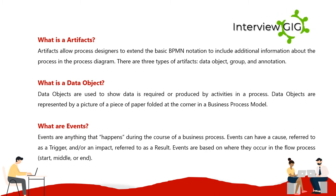What is a data object? Data objects are used to show data required or produced by activities in the process. They are represented by a picture of a piece of paper folded at the corner in the business process model. What are events? Events are anything that happens during the course of a business process. Events can have a cause (trigger) and/or an impact (result), and are categorized by where they occur in the flow: start, middle, or end.